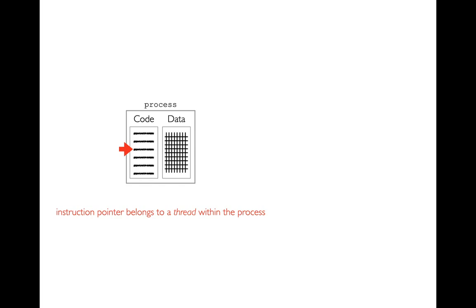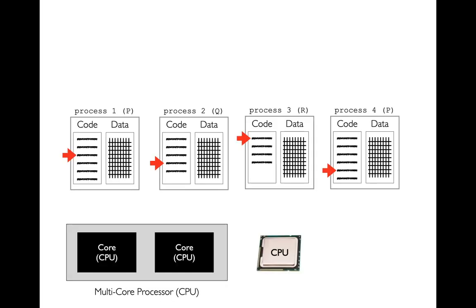So we have that thread with its instruction pointer, and I might have many different processes running on my machine — here I have processes one, two, three, and four. In the parentheses after the process name I show what the program name is, because a process is just a running program. Here I have three different programs: P, Q, and R. Program P is started twice — maybe I opened two terminal windows running the same program at the same time. Those two processes have their instruction pointers at different places; there's no need for them to be in sync.